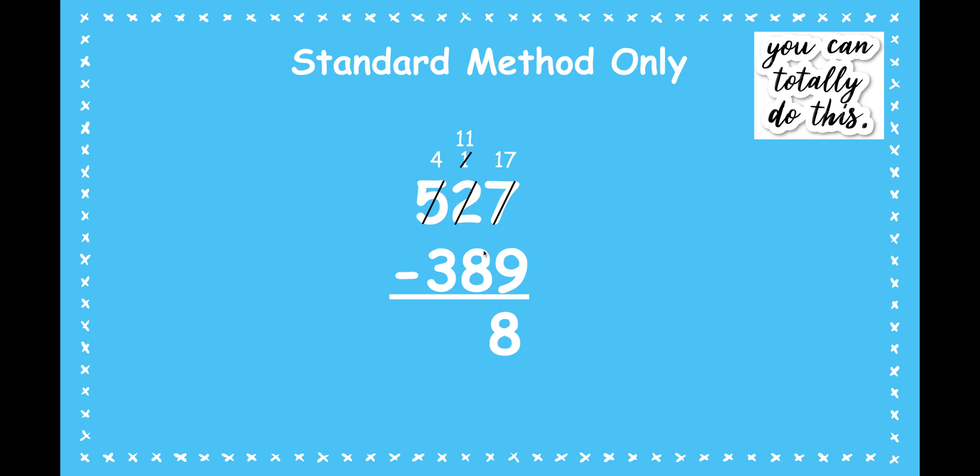Be careful. I'm not done. Hopefully you saw that I have hundreds here. That's why we always have to check. Now I need to subtract because I have 400 still. 400 minus the 300 gives me one. 138 is the difference between 527 and 389.